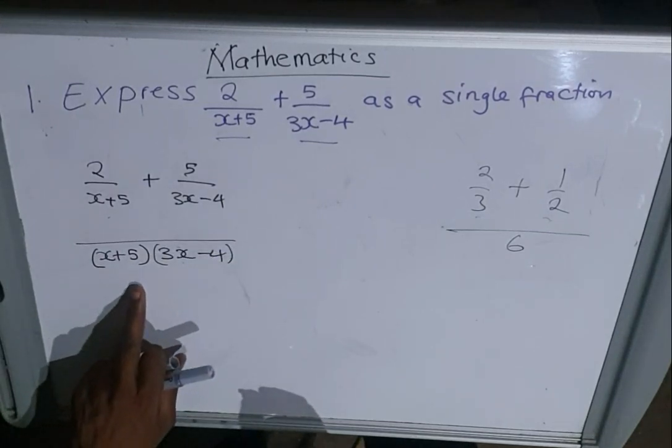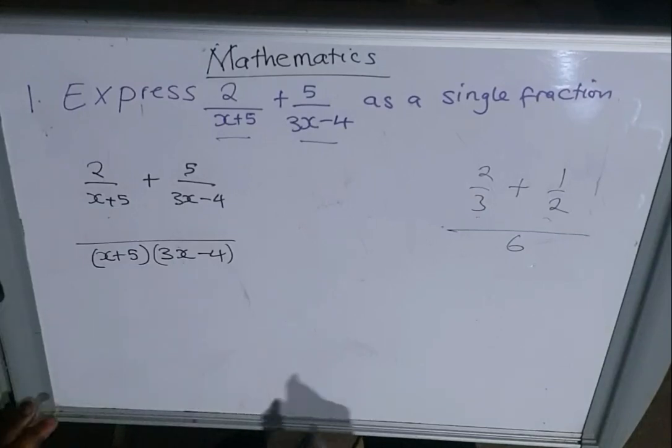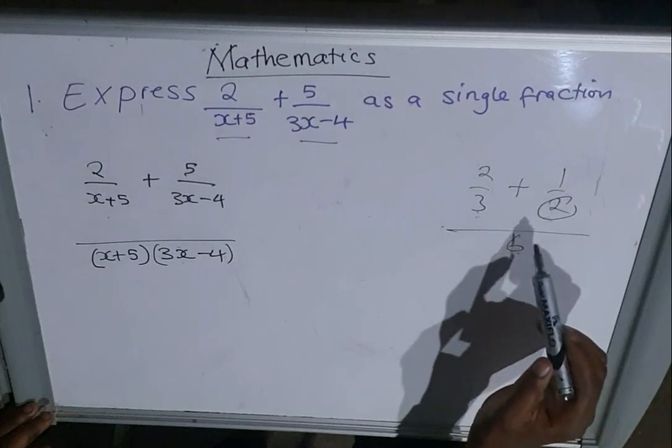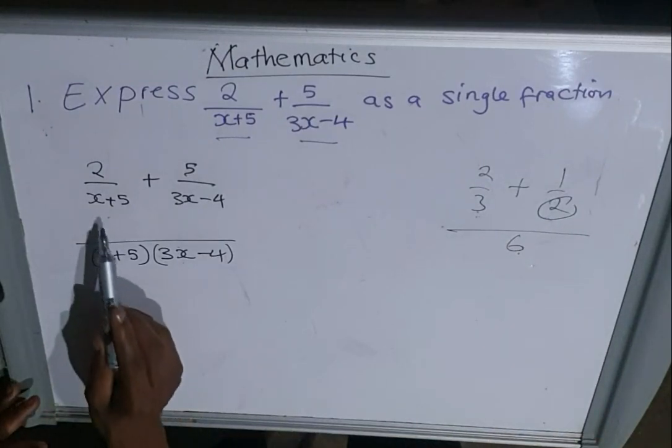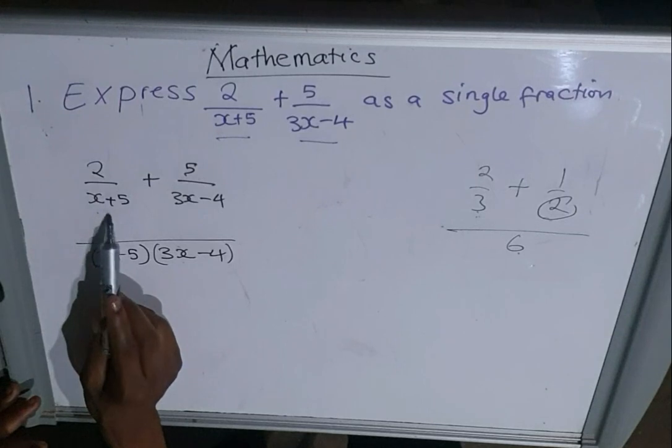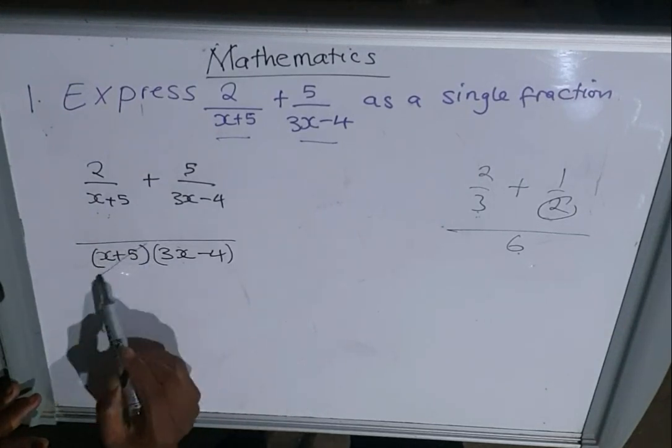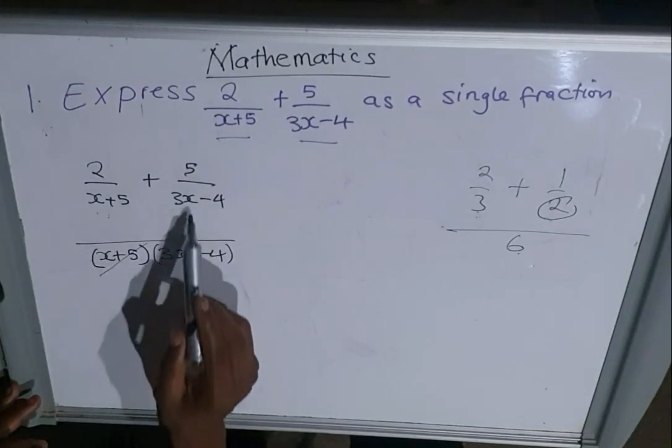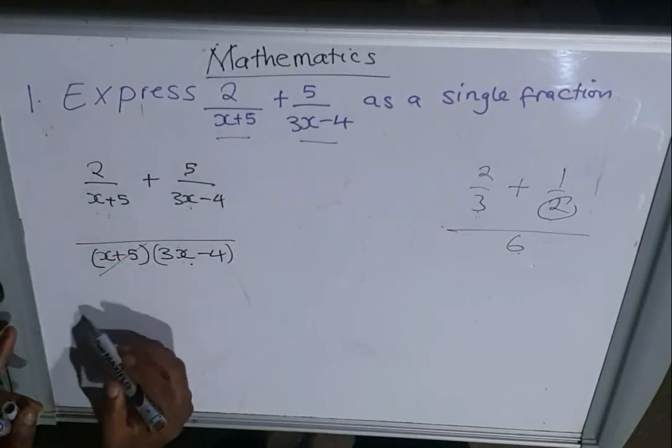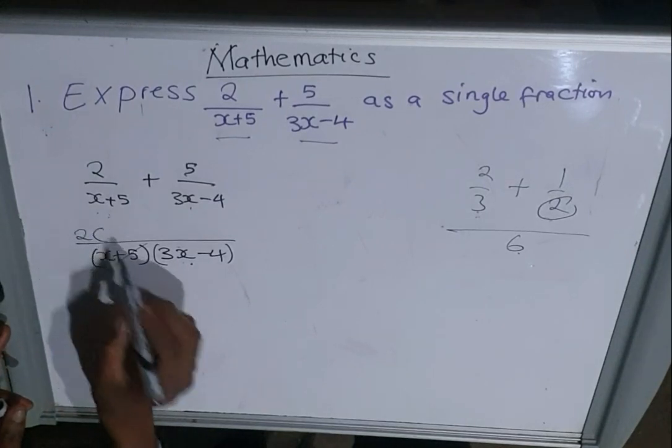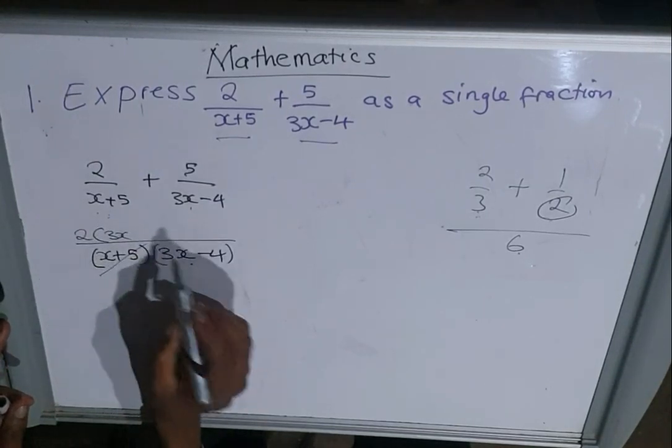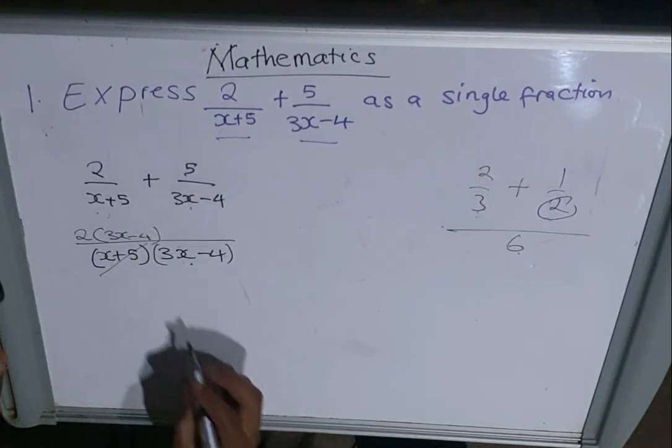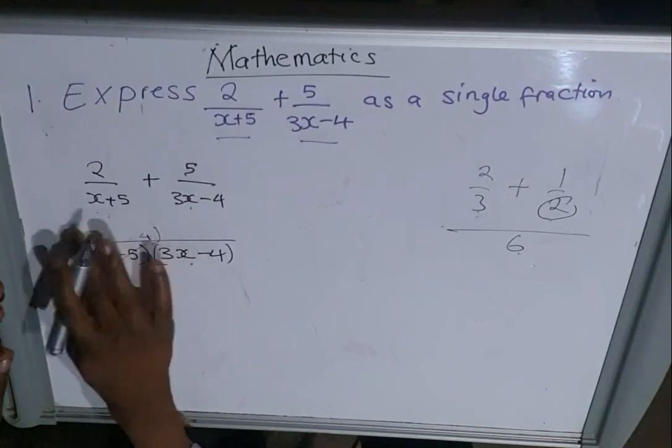It means you have multiplied this times this. So 3 into 6 goes 2 times. Even here the same thing is going to happen. (x+5) into the common denominator - this common one is going out, we are leaving that one as an answer. Multiply by the number which is on top. So 2 times (3x-4).